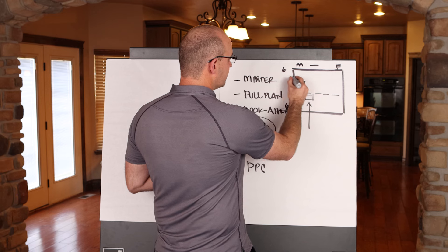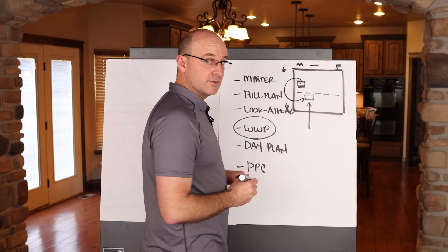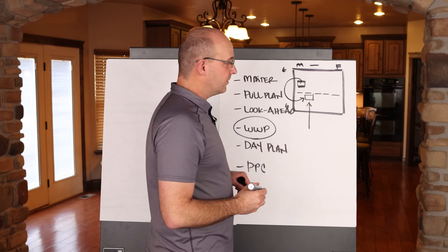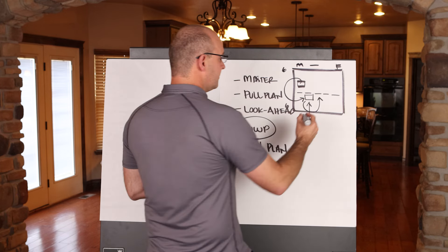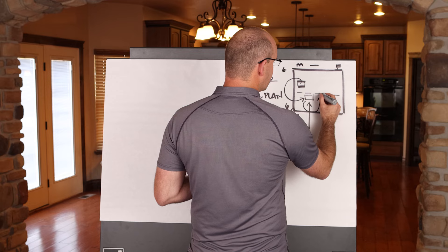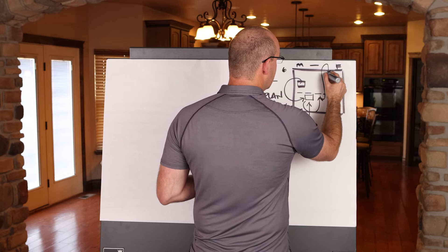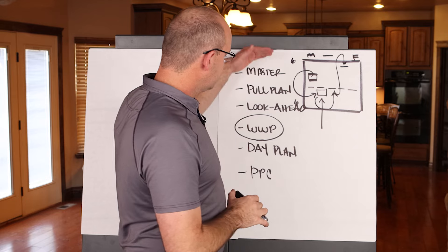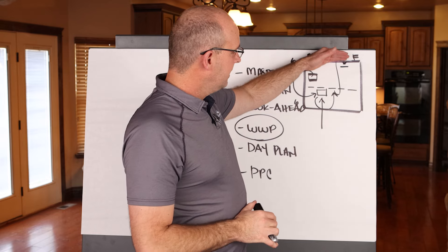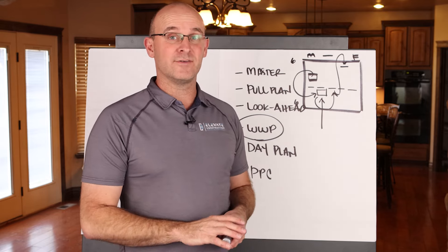And then your day plan and the tracking of your percent plan complete happens when you do your daily huddle. I do them in the afternoons. So when you look at your master schedule, that enables you to then do your pull plans, your look ahead planning, your weekly work planning, which then allows you to do your day planning and execute your work. And then if you do the huddles in the afternoon, like I'm telling you to, then you can go ahead and review that plan with the workers the next day.